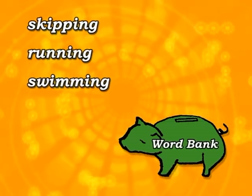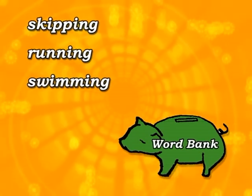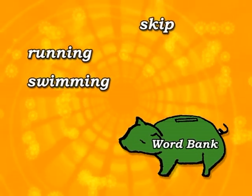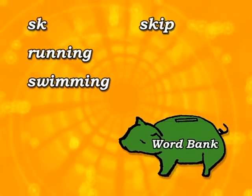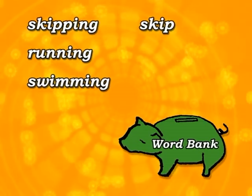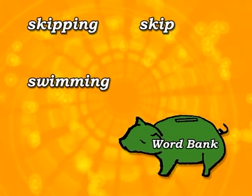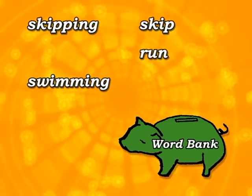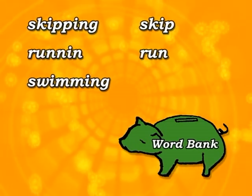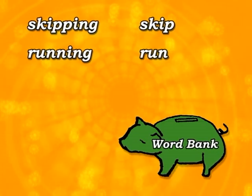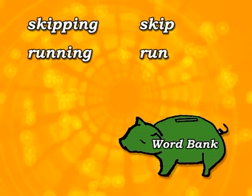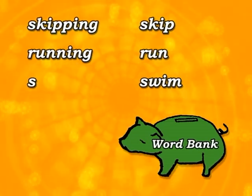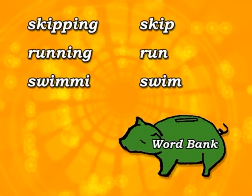Look at these three words: Skipping, Running, Swimming. Skip is spelled S-K-I-P, but skipping is spelled S-K-I-P-P-I-N-G. In the same way, run is spelled R-U-N, but running is spelled R-U-N-N-I-N-G. And swimming — swim is spelled S-W-I-M, but swimming is spelled S-W-I-M-M-I-N-G.